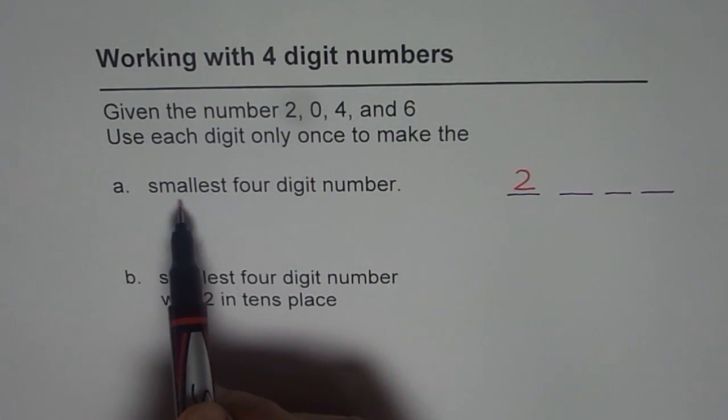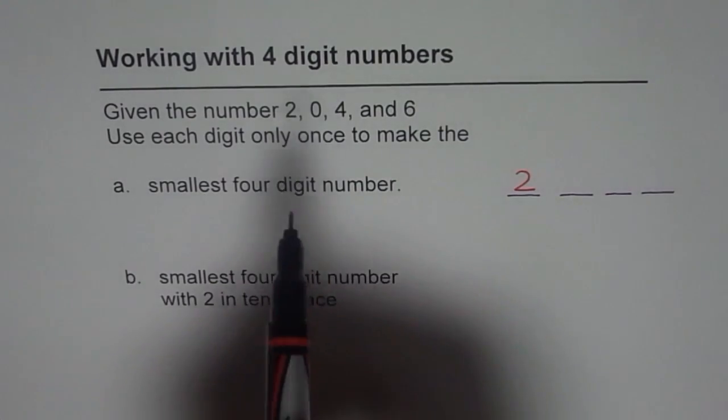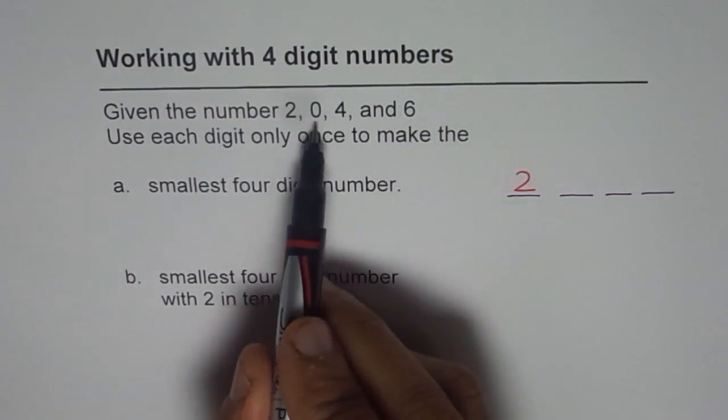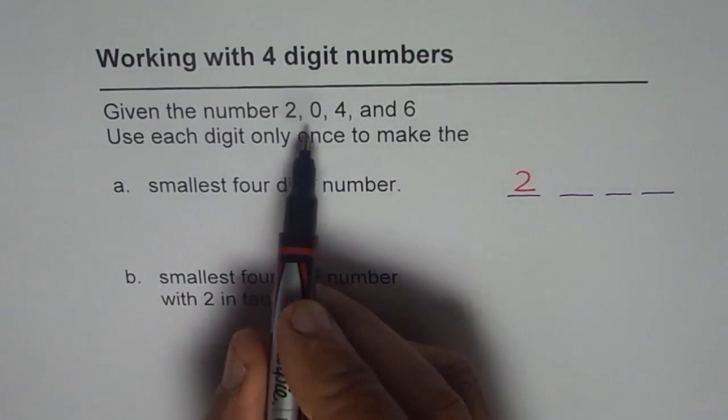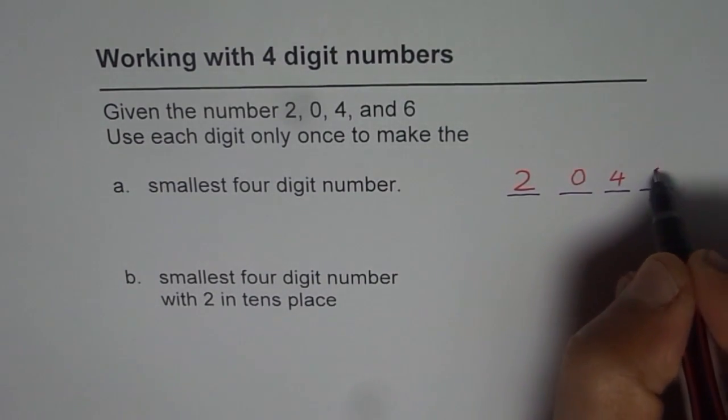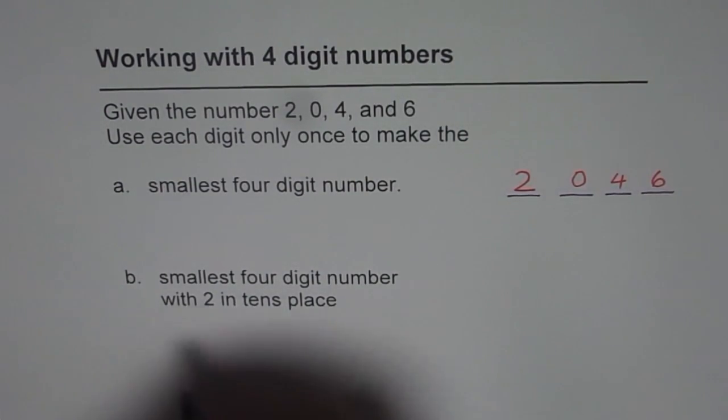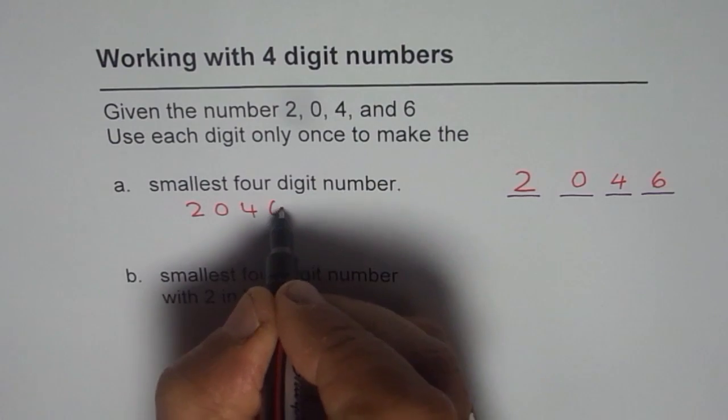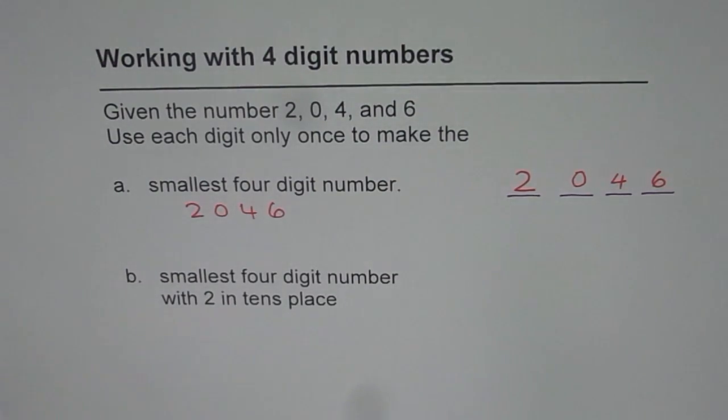And then we are looking for smallest four digit number. Remaining numbers are zero, four and six. Write them in order from least to greatest: zero, four and six. So we can write zero, four and six. So that is our answer. We get our answer as 2046. That is the smallest four digit number from the given digits.